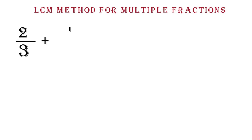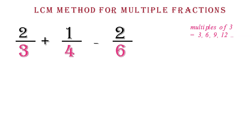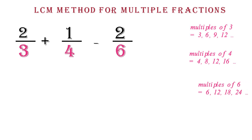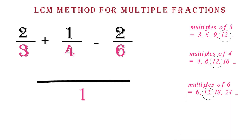LCM method for multiple fractions. In the previous video, we said that if you have more than two fractions with uncommon denominators and you want to use the cross multiplication method, you'll have to solve them two at a time. The LCM method makes it possible to solve multiple fractions together easily. For example, we want to solve 2 over 3 plus 1 fourth minus 2 over 6. We find the LCD as usual. Multiples of 3: 3, 6, 9, 12, 15, and so on. Multiples of 4: 4, 8, 12, 16, and so on. Multiples of 6: 6, 12, 18, and so on. Here we notice that the LCD is 12.